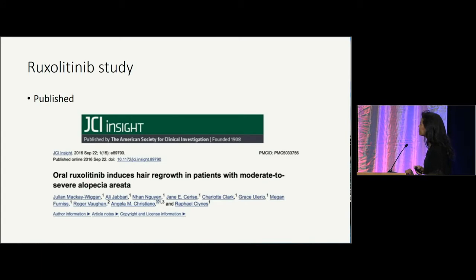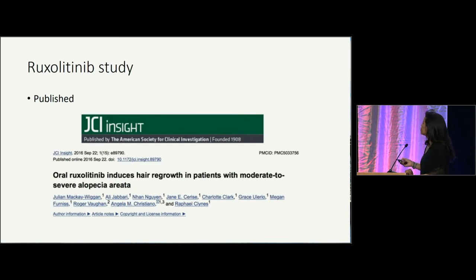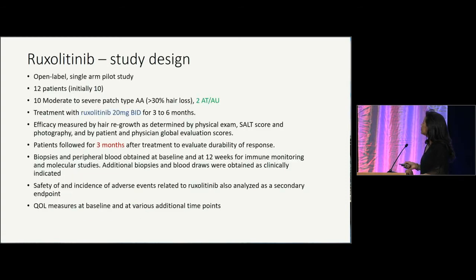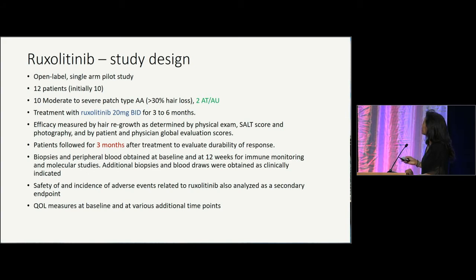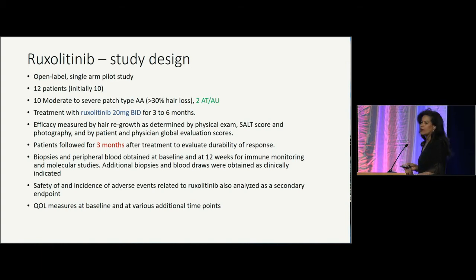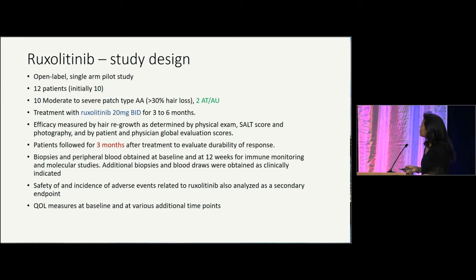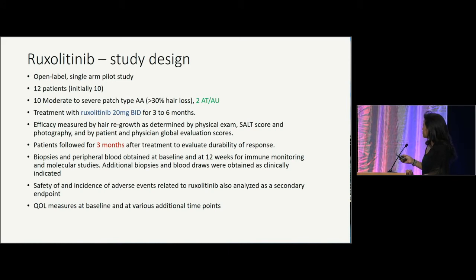This led to clinical studies in which we started with oral ruxolitinib to treat patients with alopecia areata. We did an open-label single-arm pilot study. Twelve patients were enrolled initially; most of them had moderate to severe patch-type alopecia areata, with two patients having totalis and universalis. Our dose of ruxolitinib was 20 milligrams twice per day for three to six months. We followed patients for three months after treatment to evaluate durability of response, and also collected blood and biopsies for immune monitoring.